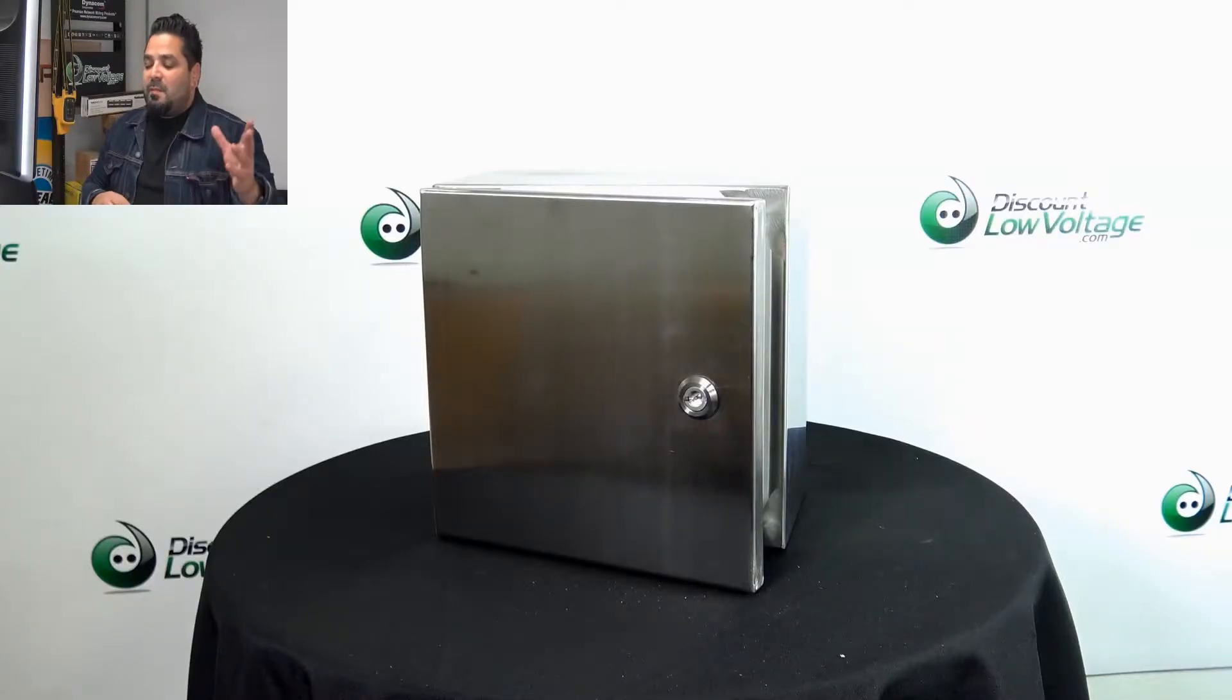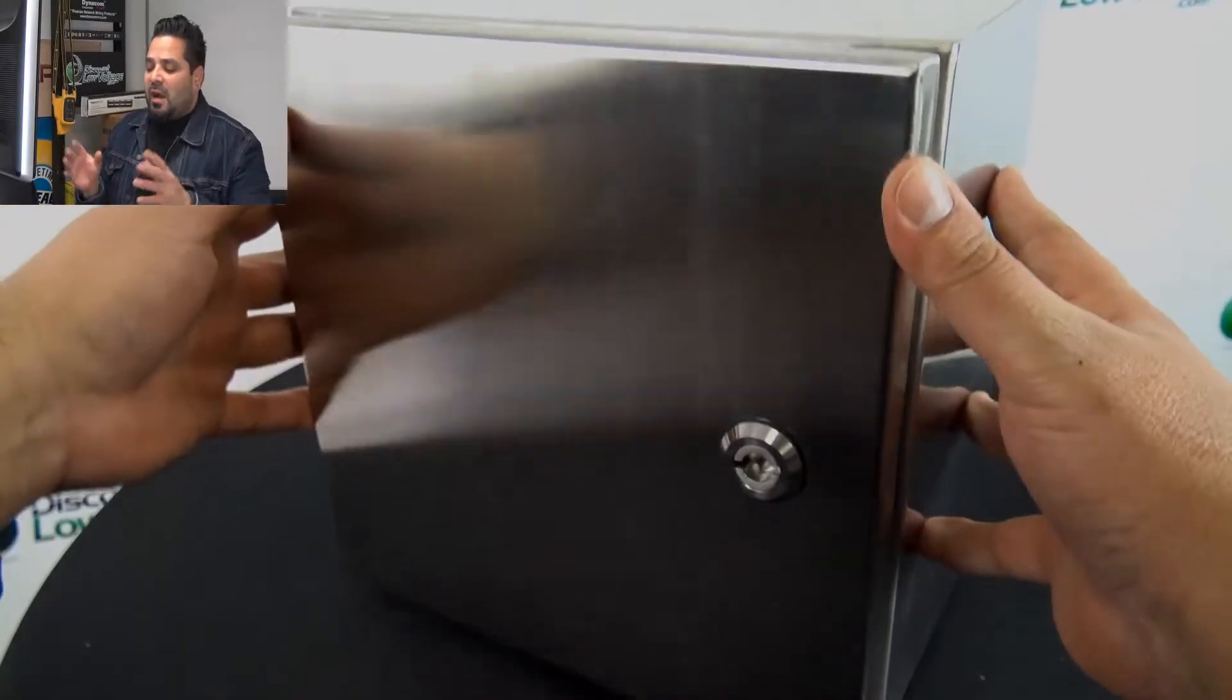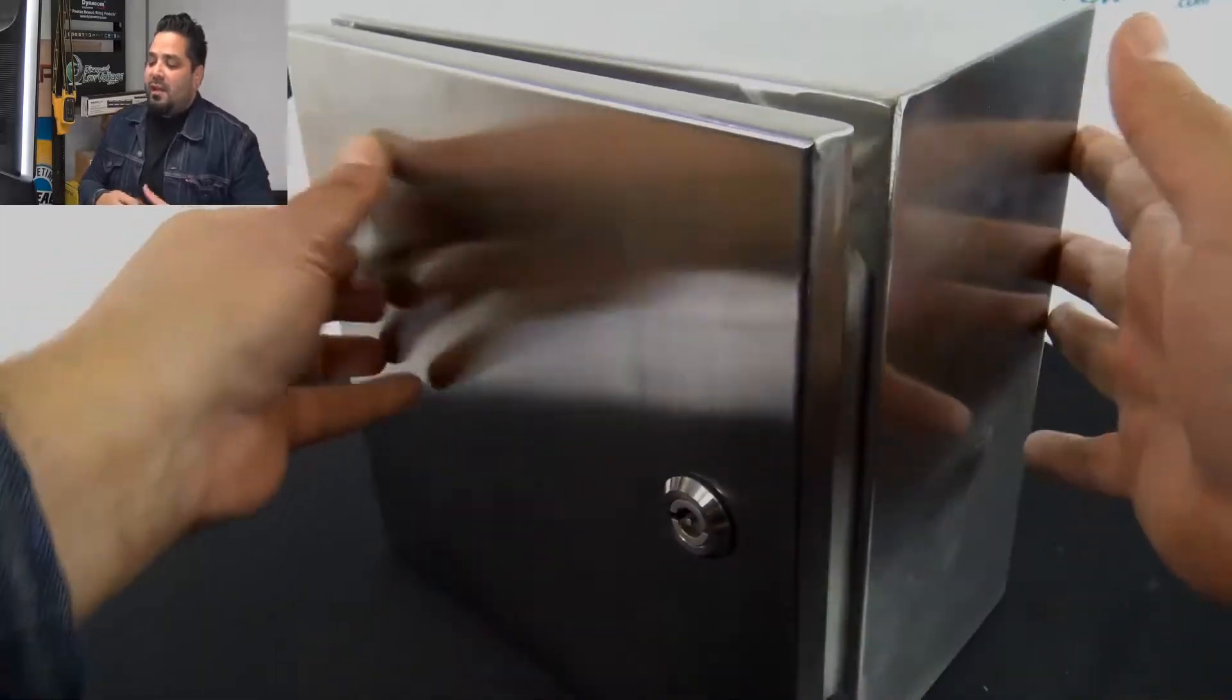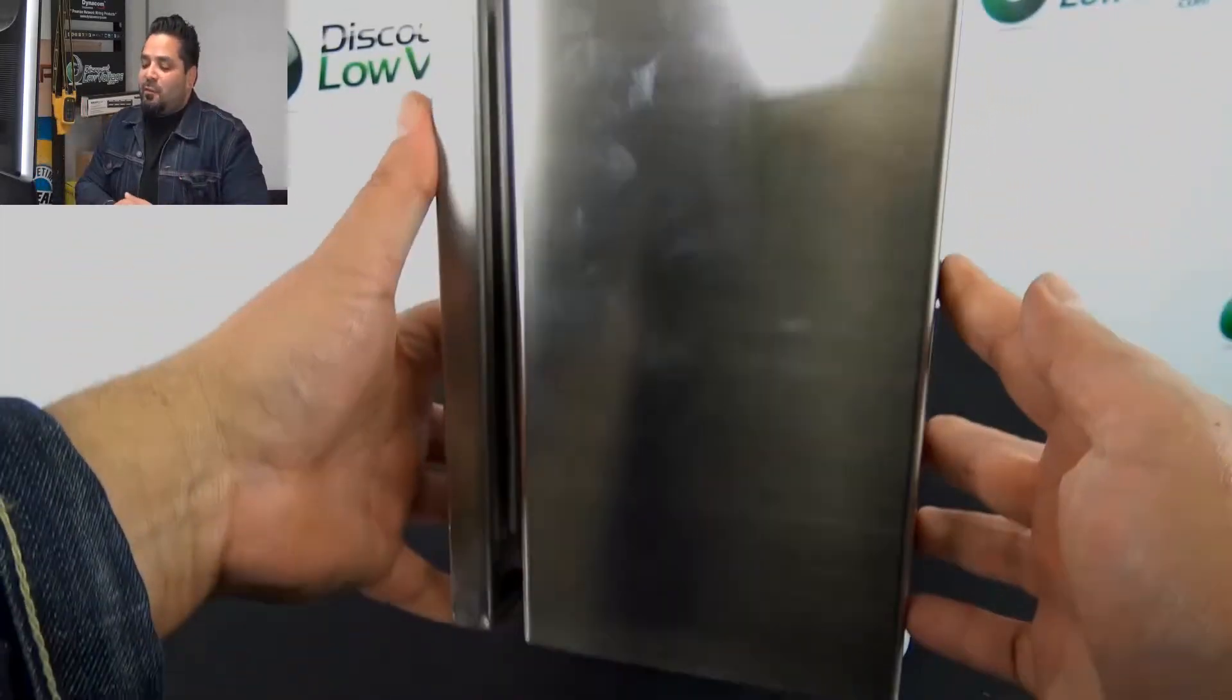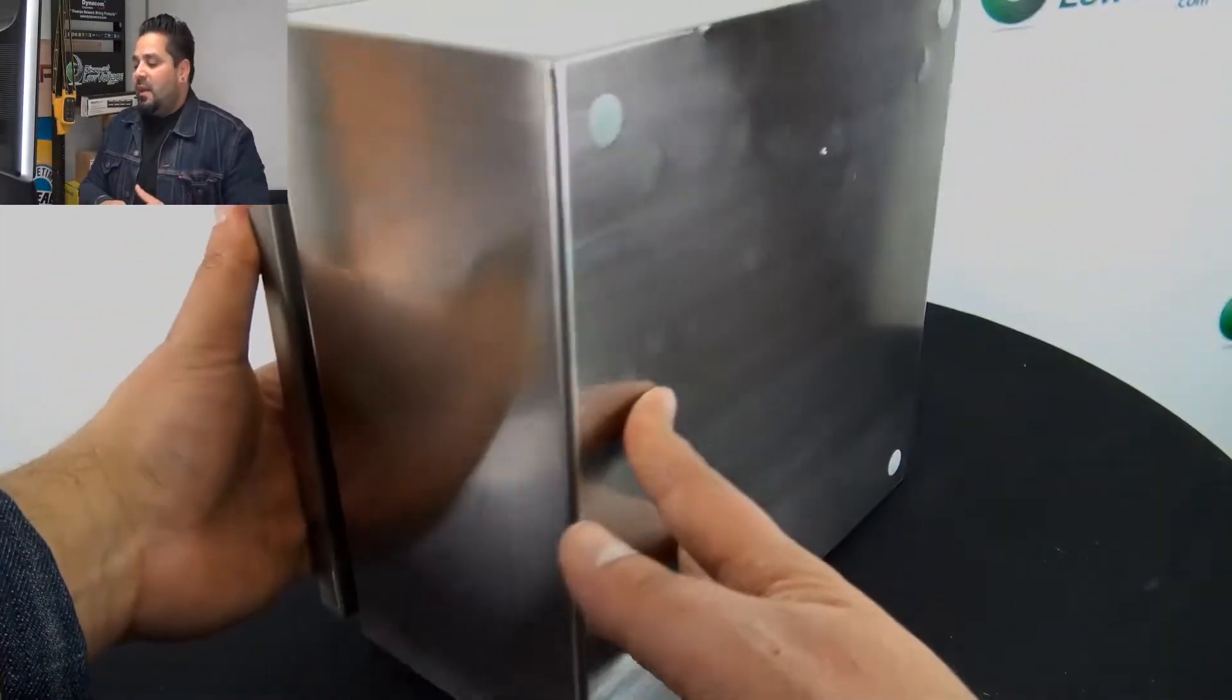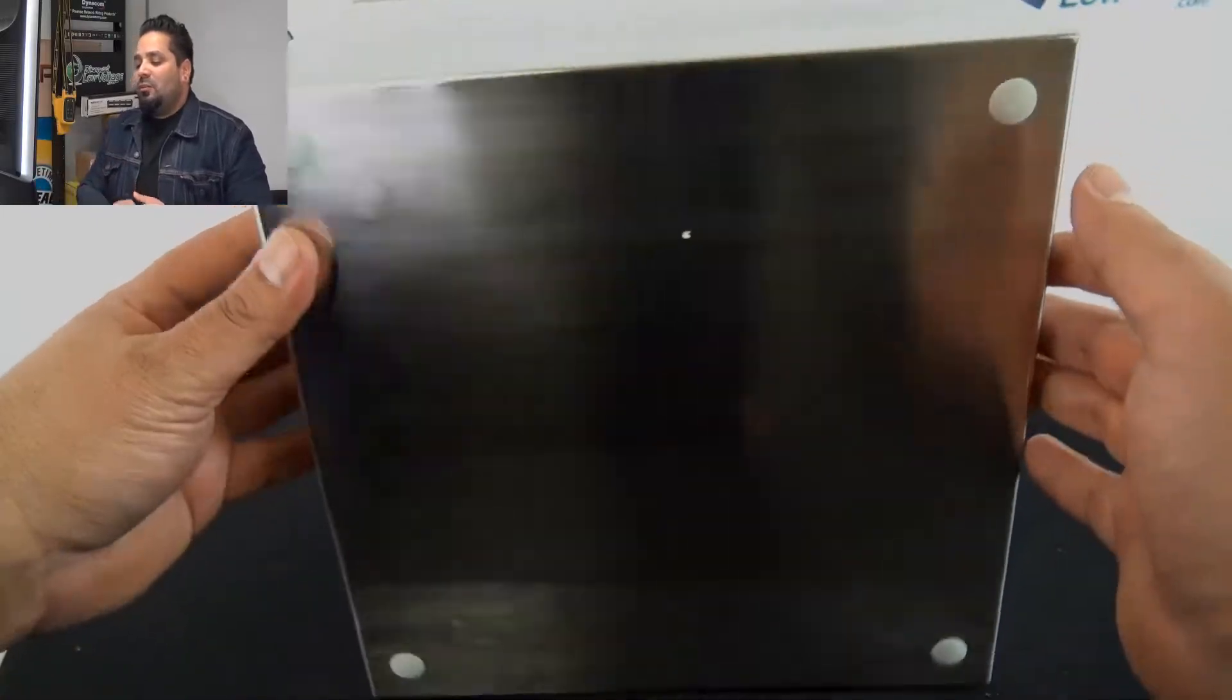Okay here's a quick look at the Bud Industries Stainless Steel S&B Series Box. Now there's a look at the outside—obviously it looks fantastic because it's stainless steel and the stainless steel finish comes out looking really sweet.